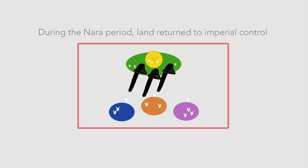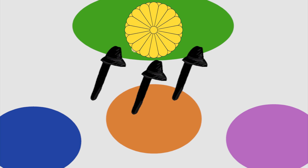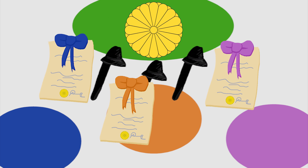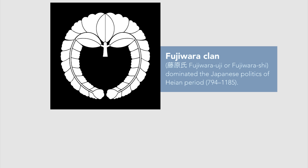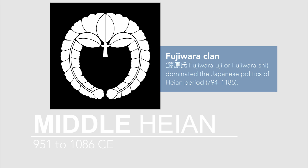Remember how in the Nara Period, lands were taken back under direct imperial control and reformed? By the Heian Period, land had largely been gifted to aristocratic clans, particularly to the Fujiwara. The Fujiwara clan, who had taken an active and dominant role in the imperial government, was a powerful political force until the middle of the 12th century. Thus, the Middle Heian Period, during which they were at the height of their influence, is often referred to as the Fujiwara Period.